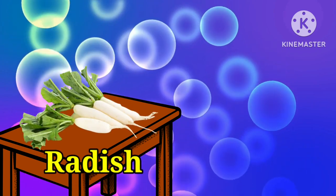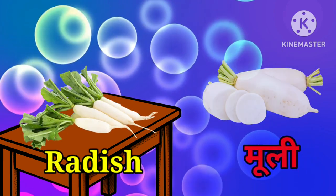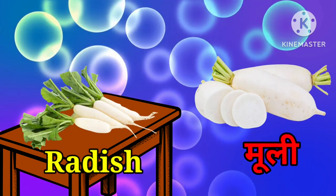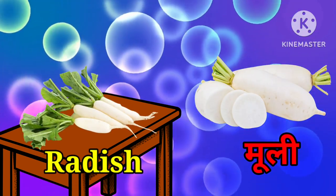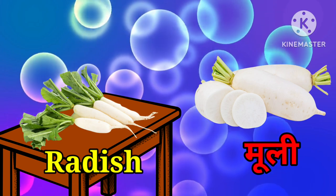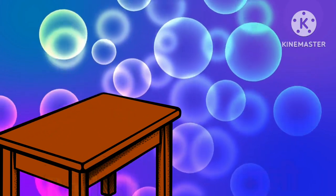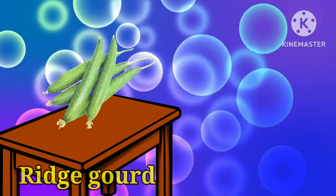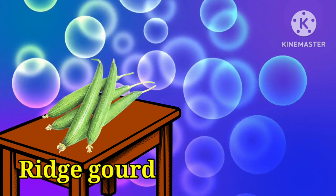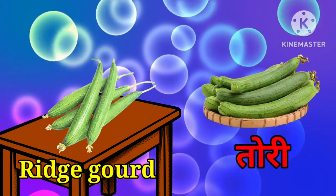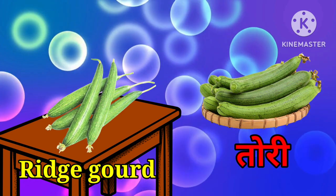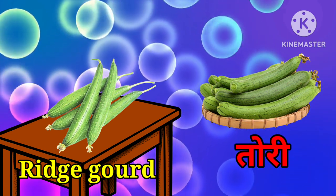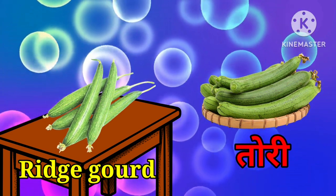Radish means muli. One more time, it's radish. Ridge gourd means tori. One more time, it's ridge gourd.